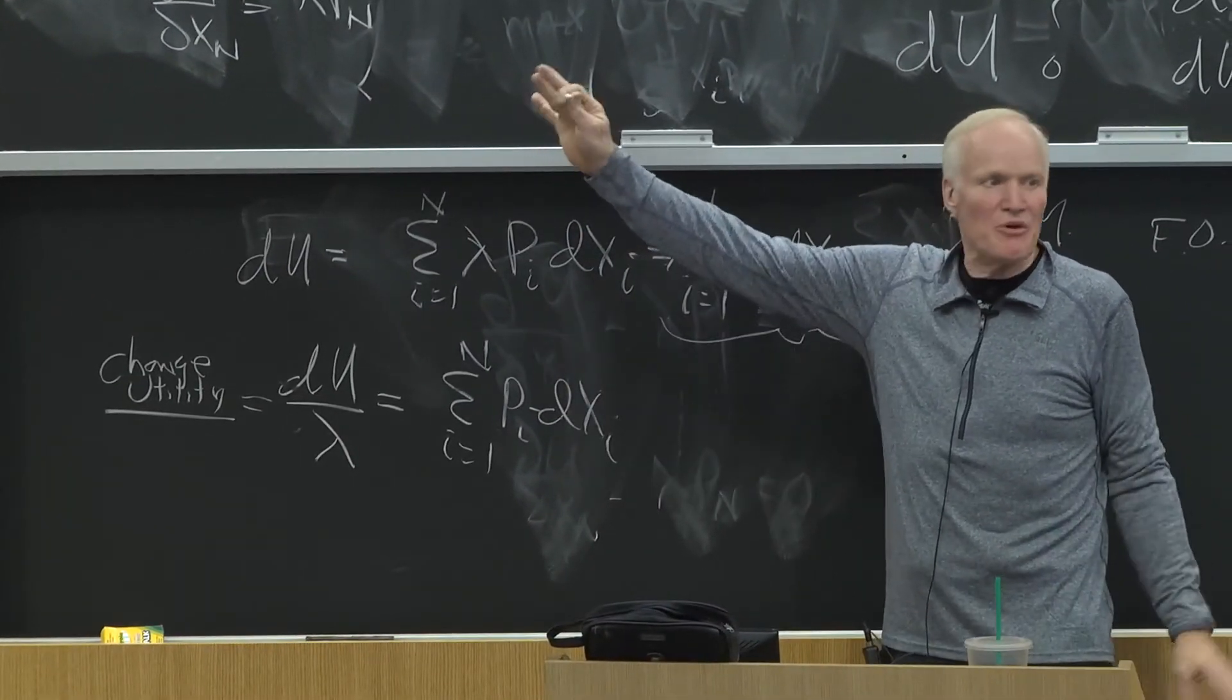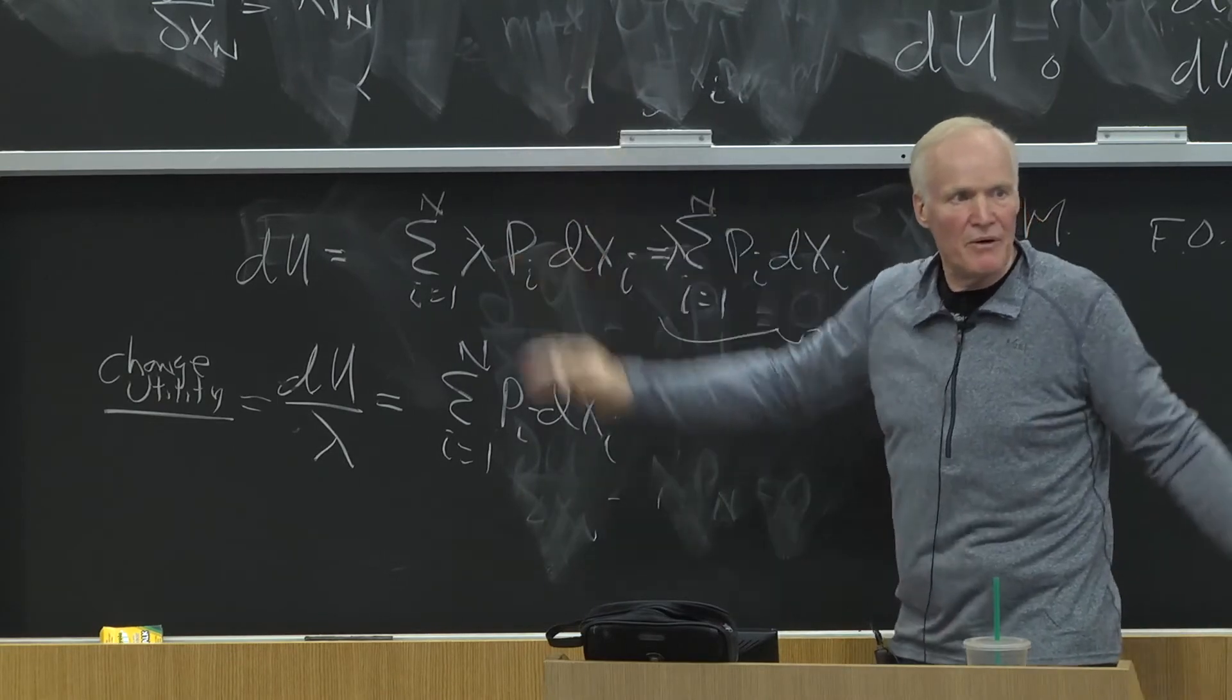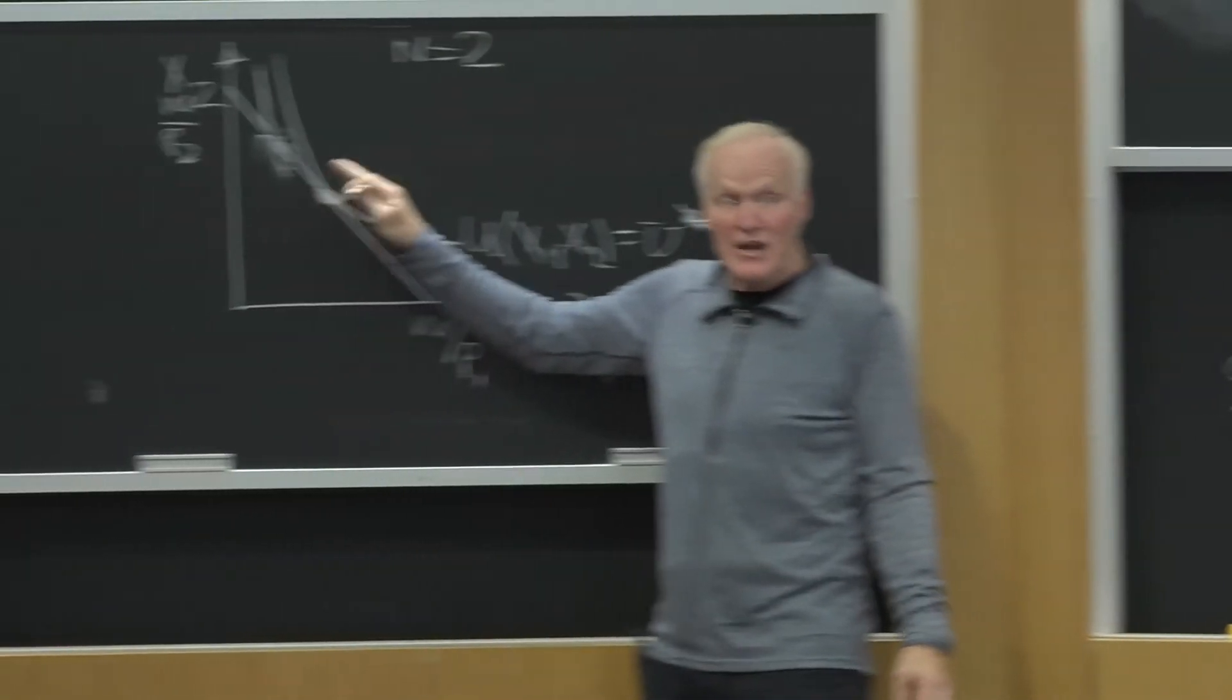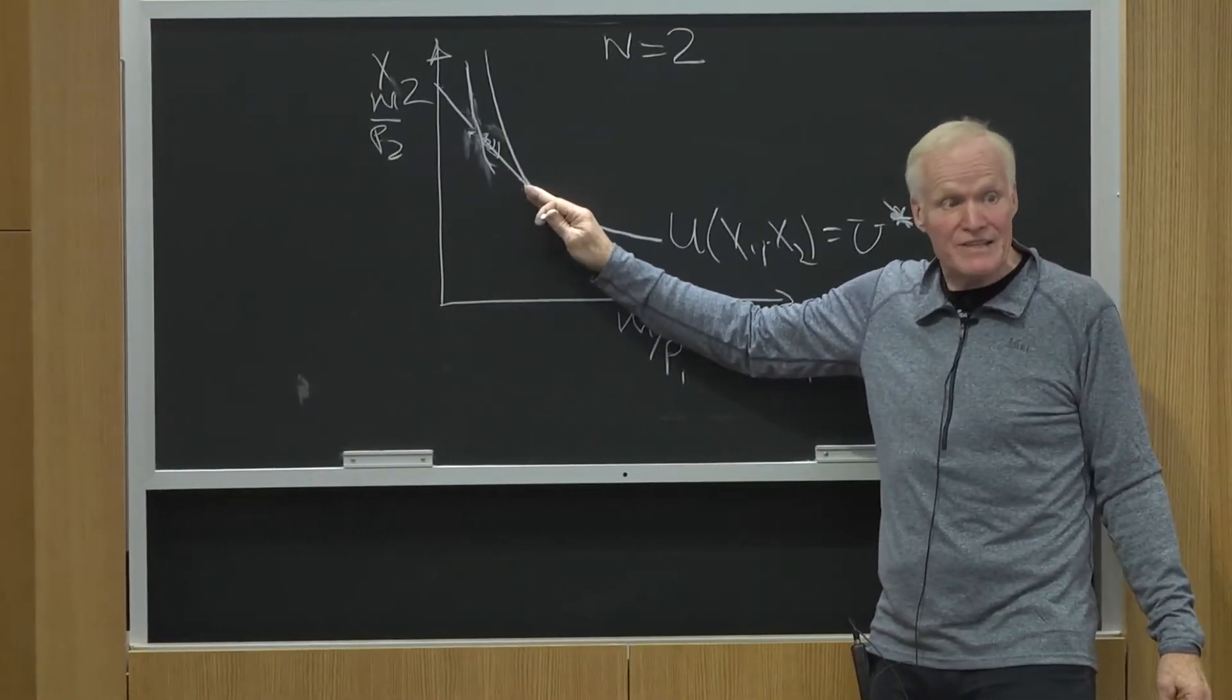And this equation is exploiting that tangency. It says, look, I can't, I don't know this guy's indifference curve. I can't measure his indifference curve. But I can measure his budget line. And I know his indifference curve has to be tangent to his budget line.